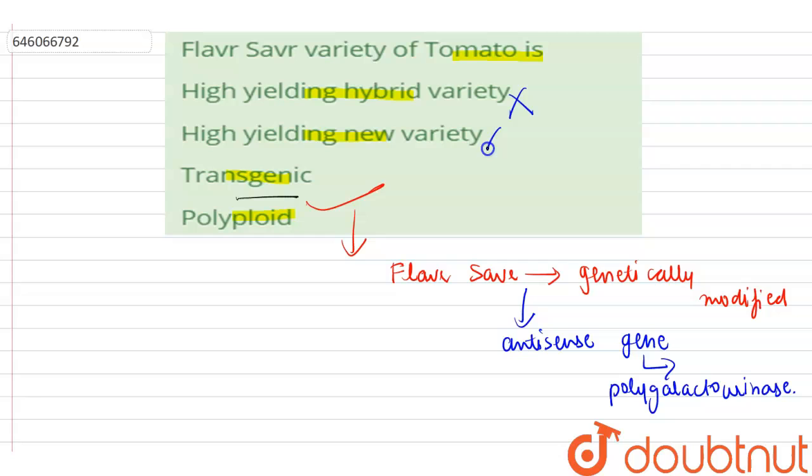It is not a new variety. It is not the variety in which an additional set of chromosomes are being added. So it is a transgenic variety. Flavr Savr variety of tomato is transgenic.